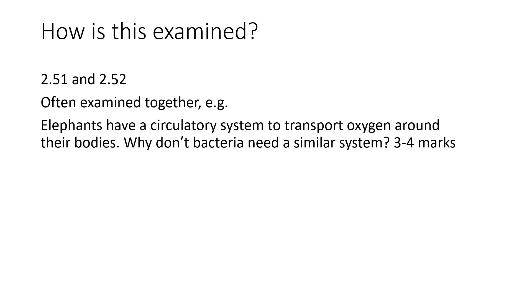With regard to transport systems specifically, 2.51 and 2.52 are often examined within the same question. For example: 'Elephants have a circulatory system to transport oxygen around their bodies. Why don't bacteria need a similar system?' This could be a three to four mark question. Elephants have a large body and a very small surface area to volume ratio. Bacteria are very small and have a large surface area to volume ratio, so diffusion happens much quicker in bacteria — in fact so quickly that bacteria get all their oxygen needs by diffusion alone, whereas the diffusion rate through an elephant's skin is too slow and they need a circulatory system.